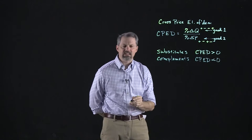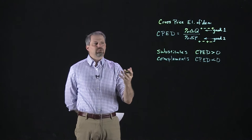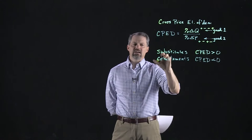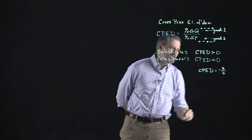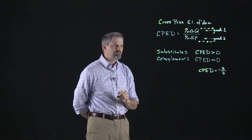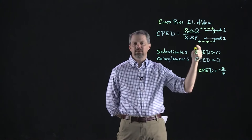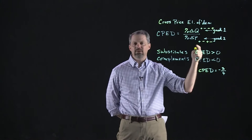So if I give you a cross price elasticity of demand of negative three-fourths, you would say: it's a negative number, so these two goods are complements. A 1% increase in the price of one good causes a three-fourths percent decrease in demand for the other good. You interpret it the same way — it's just the sign that matters here, not whether it's bigger or less than one.